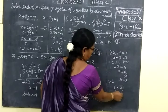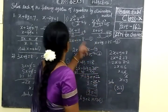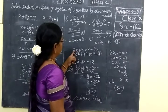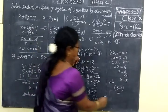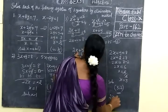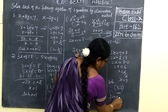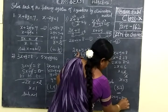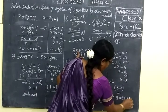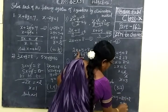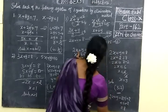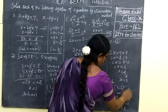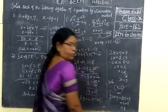You can check the answer. Substitute x equal to 3: 2 into 3 plus y value 2 — so 2 into 3 is 6 plus 2 is 8. So 2x plus y equals 8. This answer is correct. Thank you, students.